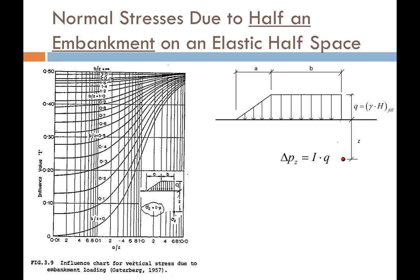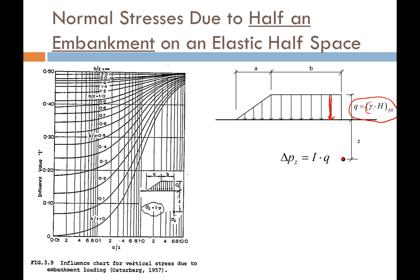We get our value of A/Z and B/Z, interpolate our influence factor I for the ramp load, and multiply by Q — the magnitude of the load. Q is equal to the unit weight of the material times the physical height of the material, essentially the vertical stress of the fill placed on the ground. H is the height beneath the crest of the embankment, not the height on the ramp.